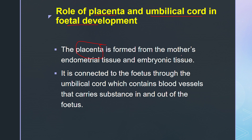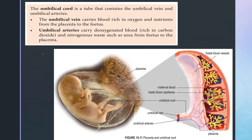The placenta is formed from the mother's endometrial tissue and the embryonic tissue. These two tissues combine to form the placenta, which is connected to the fetus through the umbilical cord. The umbilical cord acts as a connector and contains blood vessels, carrying substances in and out of the fetus.